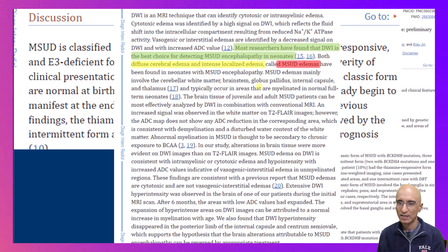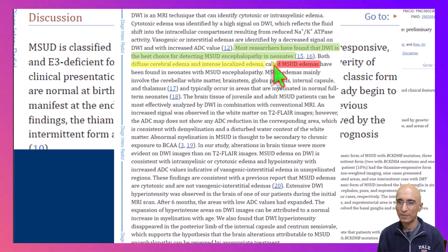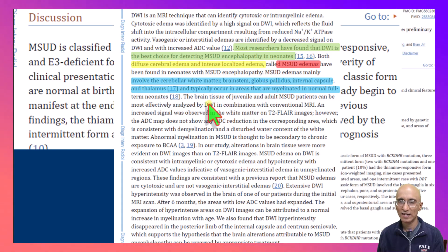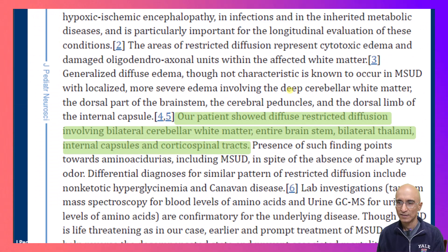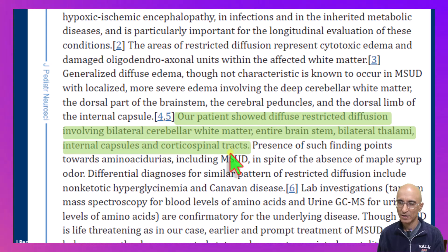They noted diffuse cerebral edema, as we saw in our child, with localized intense edema referred to as MSUD edemas, which are classically seen in the cerebellar white matter, brainstem, globus pallidus, internal capsule, and thalamus — basically in the myelinated portions of the normal full-term infant, just like what we saw in our patient with restricted diffusion involving all the myelinated regions.